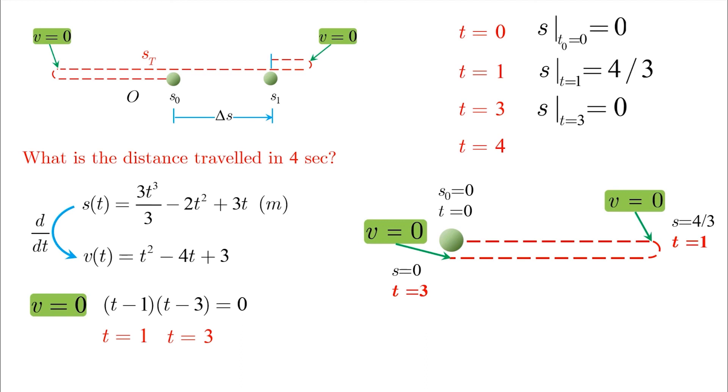Finally, when t equals four, s is found to be four over three, and this is just a coincidence. Note that we don't have any other turning points where v is equal to zero, and this means that the particle will keep moving in the positive right direction up to four seconds. What is the distance traveled? It is basically the length of those three segments, which is four meters.